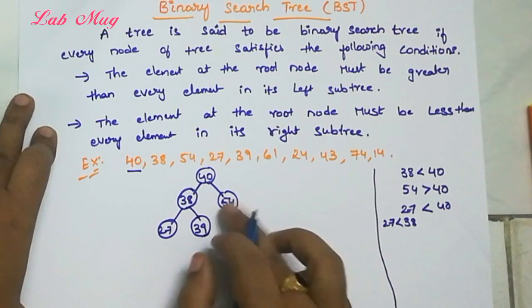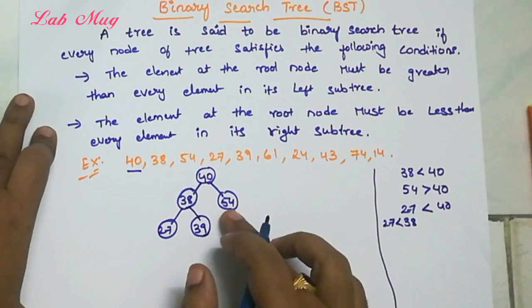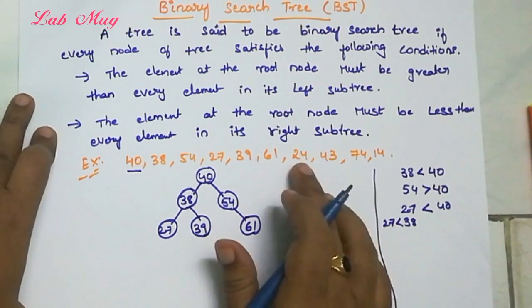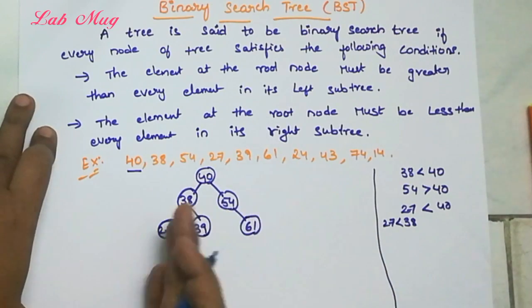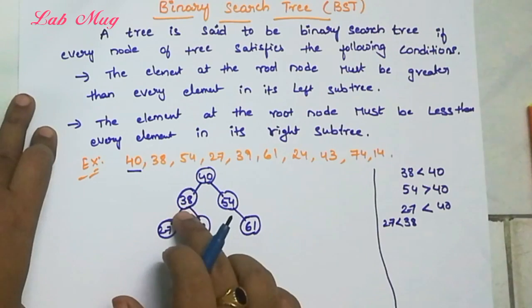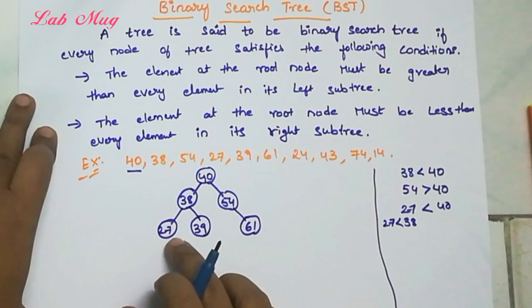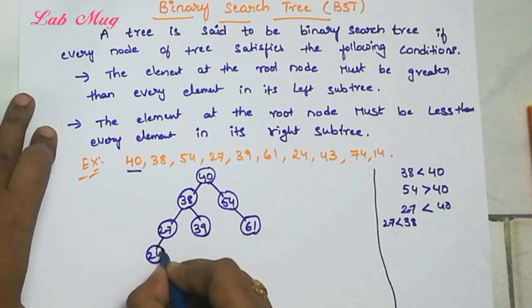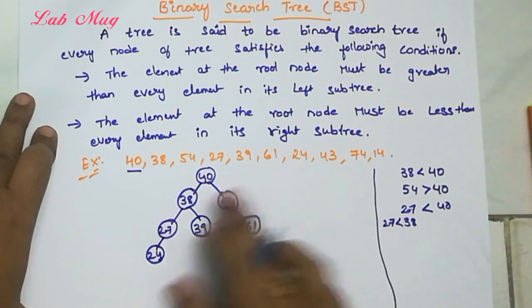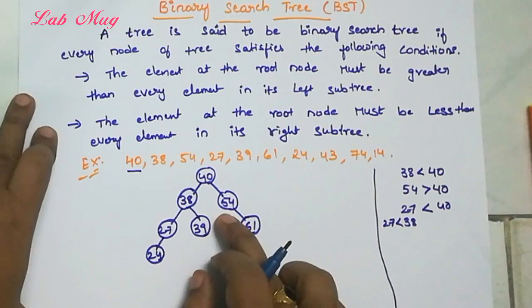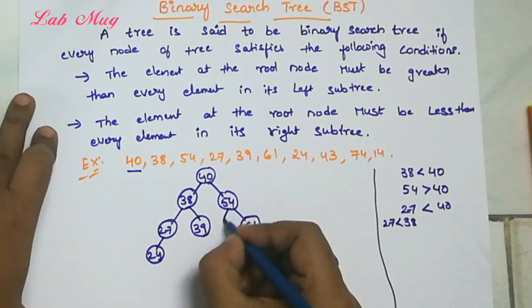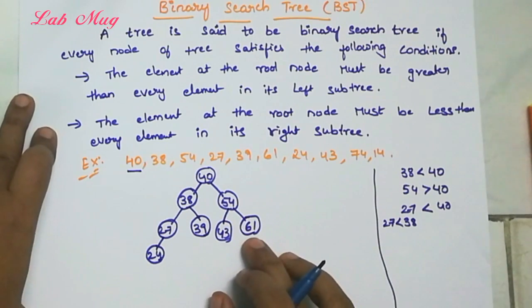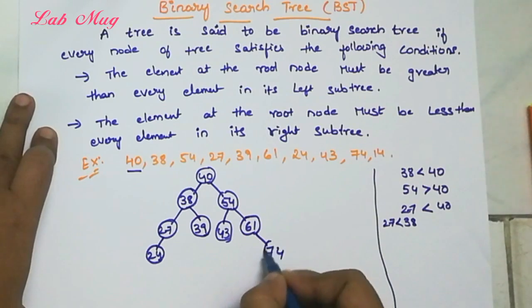Next, 24 — 24 is smaller than 40, move to left side. 24 is smaller than 38, move left side again. 24 is smaller than 27, so 24 is allotted to the left of 27. Next, 43 — 43 is bigger than 40, moving to the right side. 43 is smaller than 54, so 43 is the left element of 54. Next, 74 — 74 is bigger than 40, bigger than 54, bigger than 61, so 74 goes there.